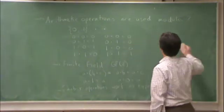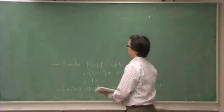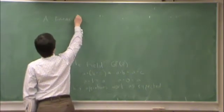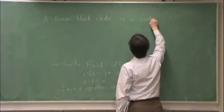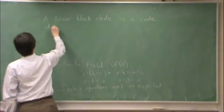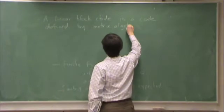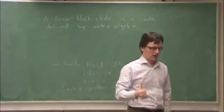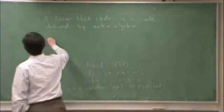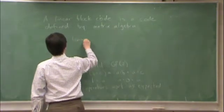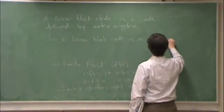So what a linear block code does... A linear block code is a code defined by matrix algebra. In particular, if you think way back to whatever course you originally took on linear algebra, a linear block code is a subspace of a vector space in GF2.